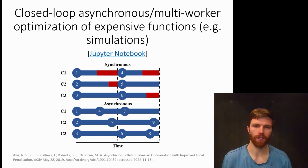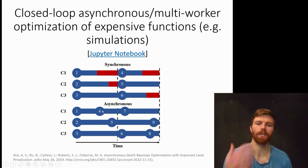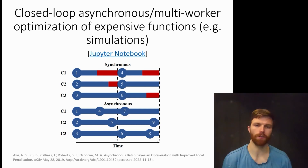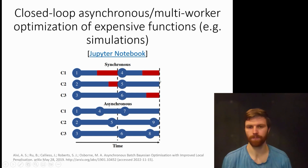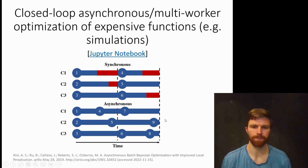A way to get around that is to do asynchronous optimization, where as soon as a worker is available, you immediately use it — you assign a next experiment to run on that worker. And so you reduce the idle time for each of the workers.